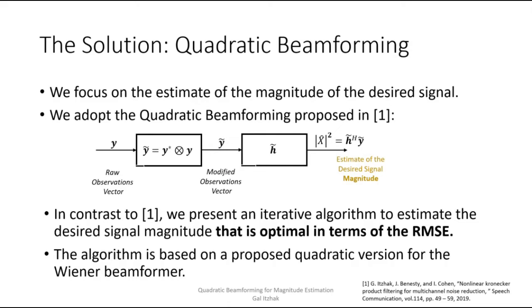Now, in contrast to previous work, here we present an iterative algorithm to estimate the desired signal magnitude that is based on a proposed quadratic version of the celebrated Wiener beamformer. As with the original Wiener beamformer, it's derived with respect to optimality in terms of the RMSE measure.